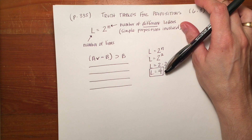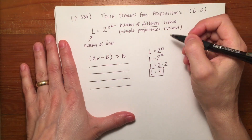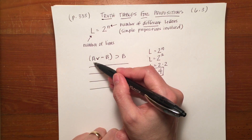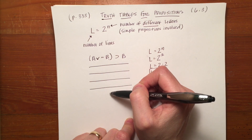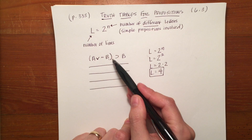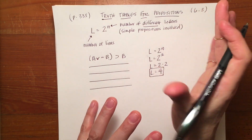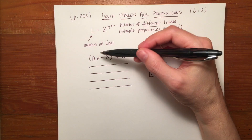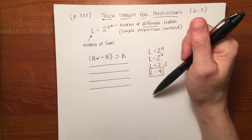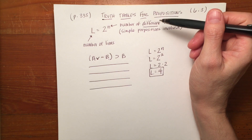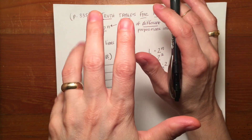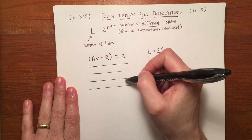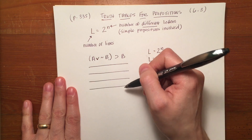To continue setting up our truth table for this particular proposition, we're going to need to set up a number of trues and falses under each letter — not under each operator yet, but just under each letter — so that we can use our truth table for its purpose. The purpose of a truth table is to look at the potential truth values of any particular compound proposition and to determine whether or not that particular premise is valid when we're talking about arguments. Here we're looking for the number of different combinations that we could have.